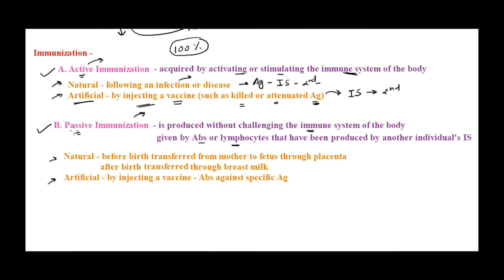Now for passive immunization — we are not provoking the immune system but giving something ready-made. Naturally, this comes into picture with a fetus. Before birth, the mother transfers antibodies to the fetus through the placenta — these are ready-made antibodies from the mother, giving the baby temporary immune resistance until its own immune system is ready.